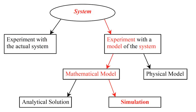The term computational scientist is used to describe someone skilled in scientific computing. This person is usually a scientist, an engineer, or an applied mathematician who applies high-performance computing in different ways to advance the state of the art in their respective applied disciplines in physics, chemistry, or engineering.